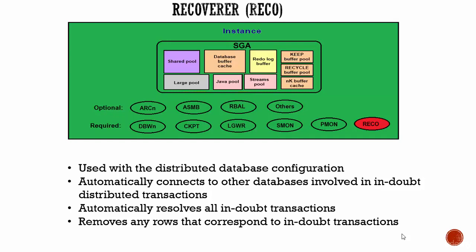In this session let's learn about the recoverer process. This recoverer process is only applicable to distributed databases. It automatically resolves failures involved in distributed transactions by connecting to other databases involved and resolving all in-doubt transactions. If necessary, it removes the rows from the table which is involved in the in-doubt transaction.